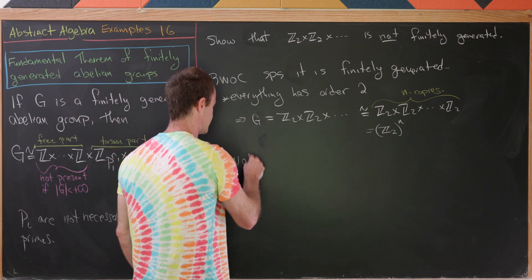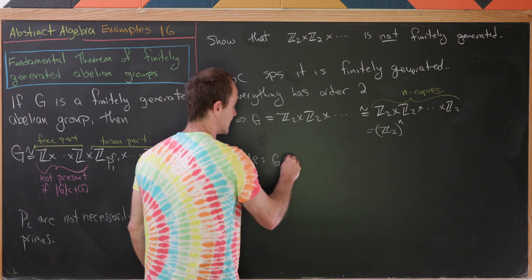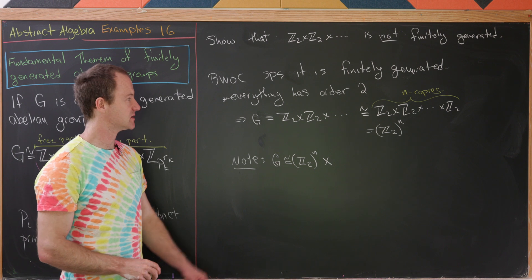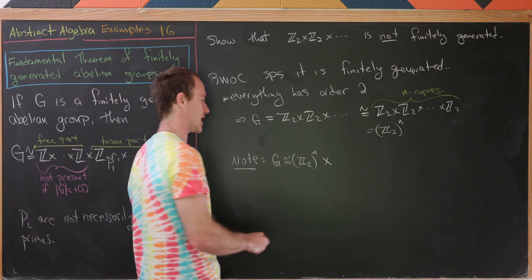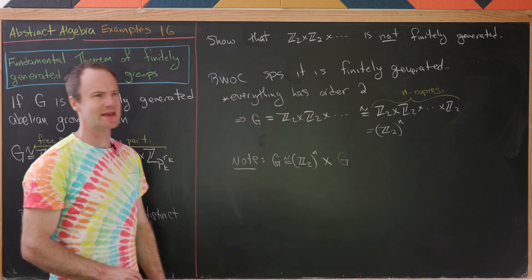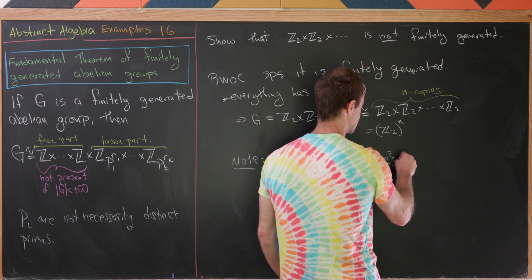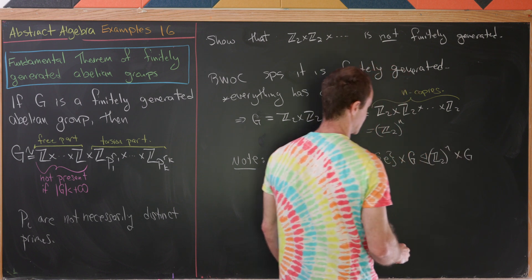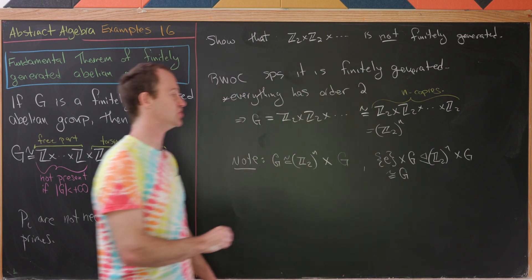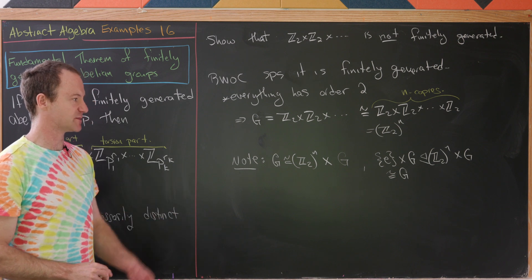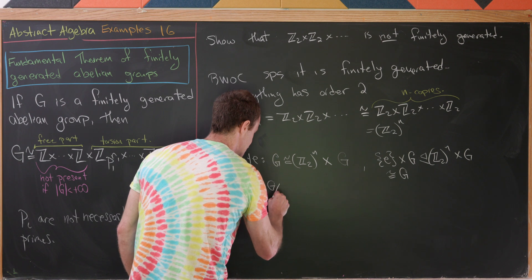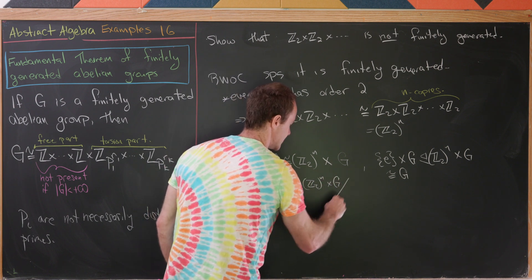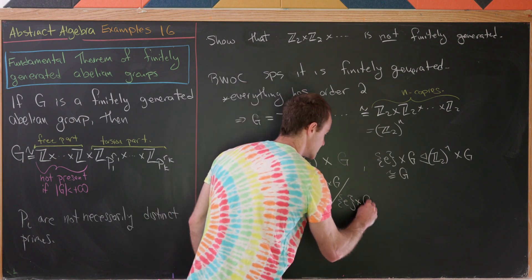But now let's notice we have this peculiar setup. We have G is isomorphic to Z2 upper N cross another infinitely many copies. That's because if you take off N copies, you still have infinitely many copies. So that's going to be cross G like that. But now let's notice that the subgroup, which is the identity cross G, is definitely normal inside of Z2 to the N cross G. And it as a subgroup is isomorphic to G itself. So now what we'll do is take the corresponding quotient group on both sides. So let's do G mod G over here on the left. And then over there on the right, let's do Z2 upper N cross G mod this E cross G.